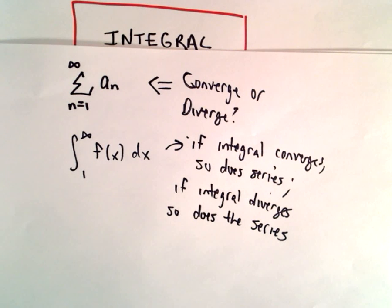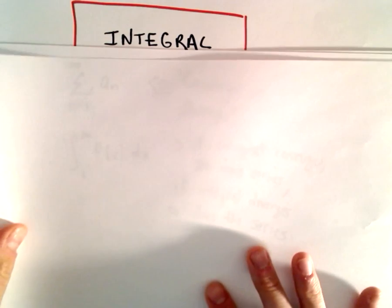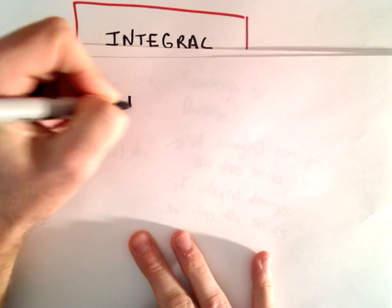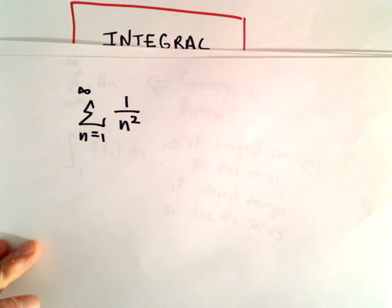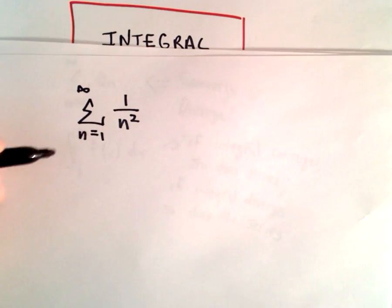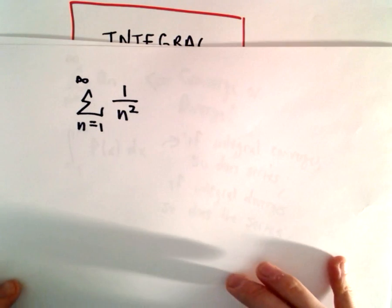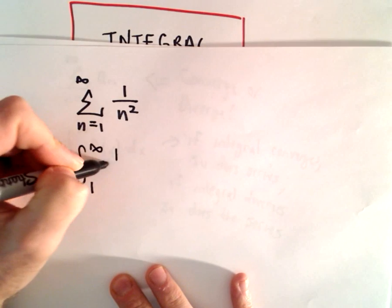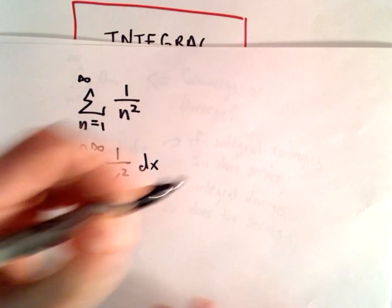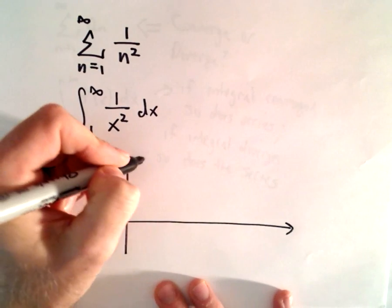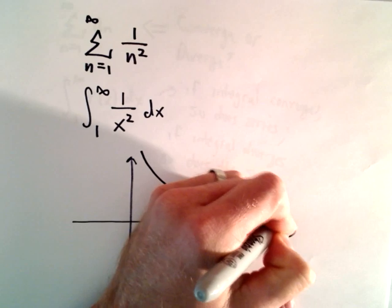I'm going to take two specific examples to hopefully convince you. Suppose we start with the series from n equals 1 to infinity of 1 over n squared, and we want to know if it converges or diverges. You may recognize this as a p-series. The idea is we look at the integral from 1 to infinity of 1 over x squared dx, and I'll make a rough graph of 1 over x squared — it looks something like that.